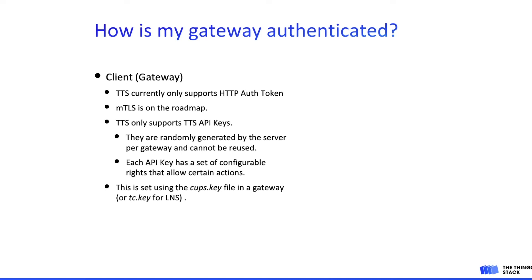On the client authentication side, The Things Stack currently only supports HTTP token authentication — mutual TLS is on the roadmap. We only support HTTP token right now because it's the simplest and covers most use cases. The Things Stack specifically only supports Things Stack API keys, not any random HTTP token. These are randomly generated by the server side per gateway and cannot be reused between gateways. We've had instances where people used the same key for all their gateways, which is extremely risky security-wise. Additionally, the API key has an additional feature where you can attach certain rights to it, so when a gateway presents an auth token, the rights for the actions the API key has can be easily inferred. This value is set using the CUPS.key file, or TC.key in the case of LNS.